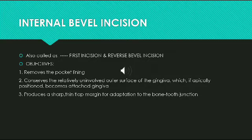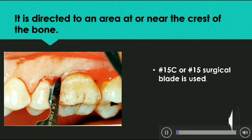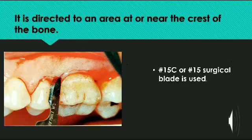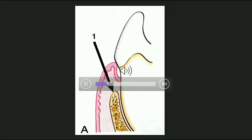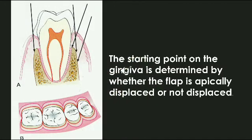The third objective is that it produces a sharp thin flap margin for adaptation to the bone-tooth junction. The internal bevel incision is directed to an area at or near the crest of the bone. You can appreciate the position of the knife in the given diagram. A 15C blade is used for the first incision, and in this diagram you can see the position of the knife which is at or near the crest of the bone.